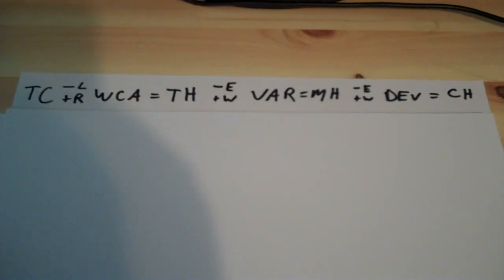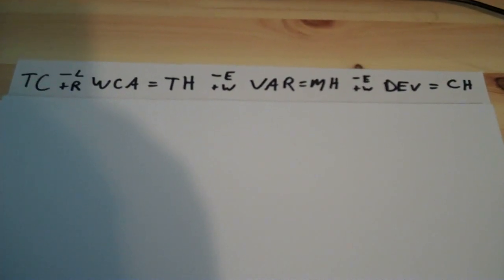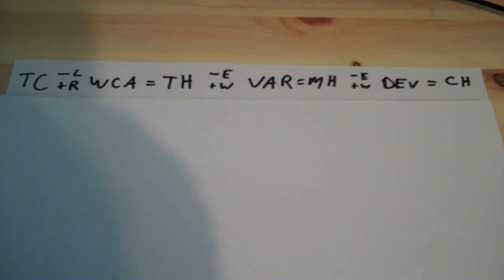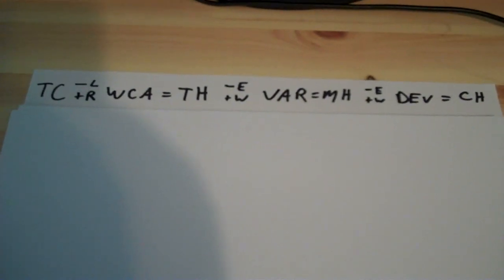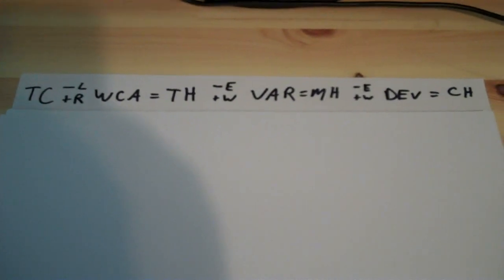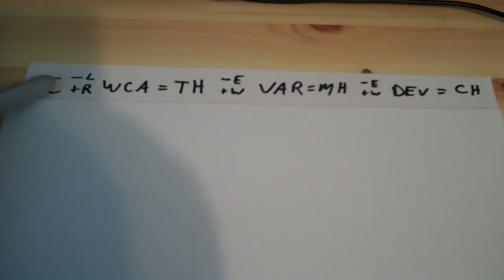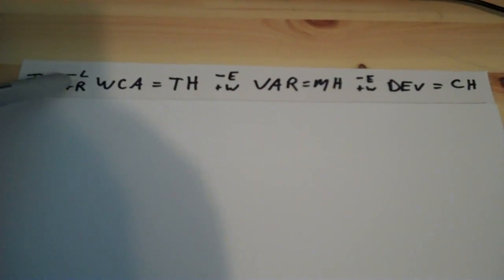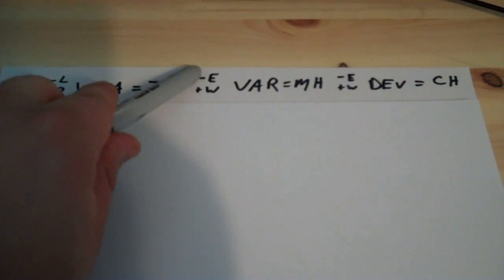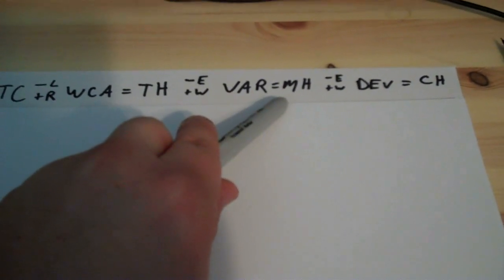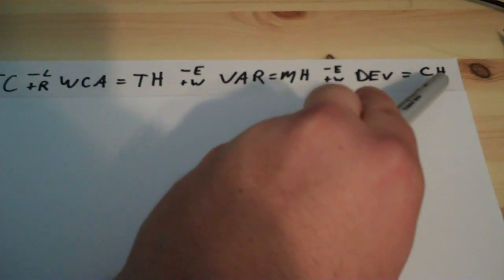When calculating your magnetic heading from the true course, you use the formula that Jason introduced in his earlier video. The basic formula, which is also printed on most E6B flight computers, is: True Course, minus a left or plus a right wind correction angle, equals True Heading. You then subtract east or add west variation to get your Magnetic Heading. Afterwards, you subtract east or add west deviation to get your Compass Heading.